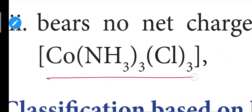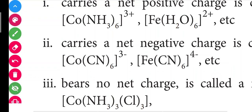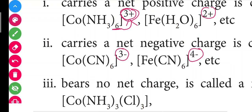For a neutral complex, for example Co(NH3)3Cl3, the bracket has no charge. If the bracket has a positive charge — that is a cationic complex. If the bracket has a negative charge — that is an anionic complex. If the bracket has no charge — that is known as a neutral complex.